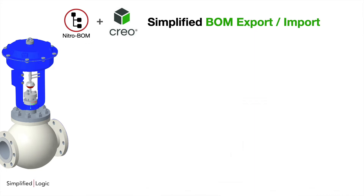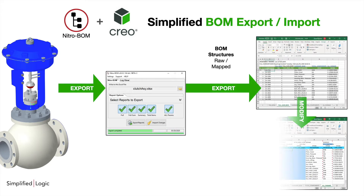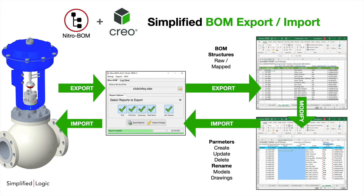Another nice thing about this tool is that not only can you export bills of materials into different formats, you can also make modifications from Excel to do things like parameter creation, deletions, or updates, and also rename models and drawings from Excel. You can also batch export and batch import changes.